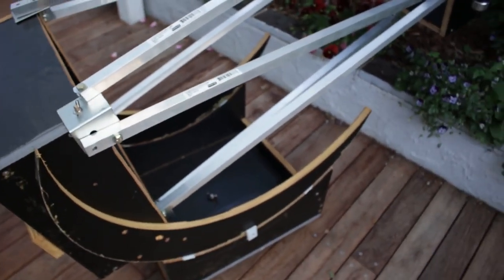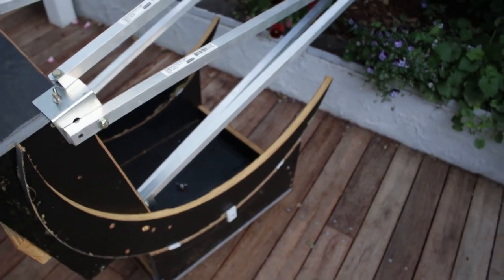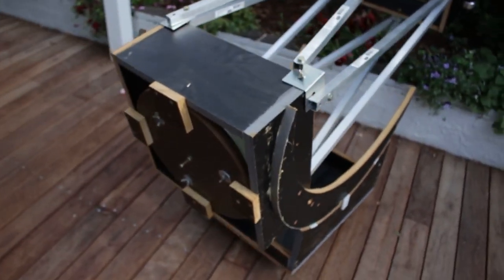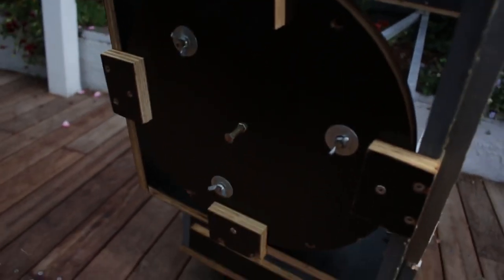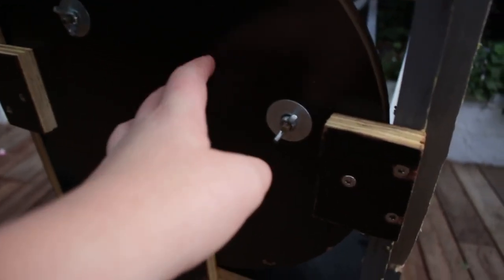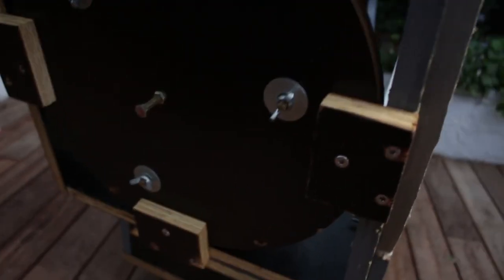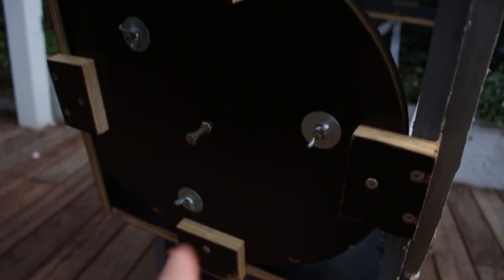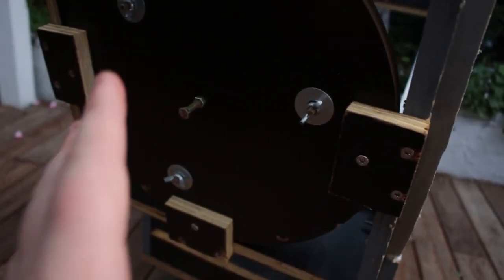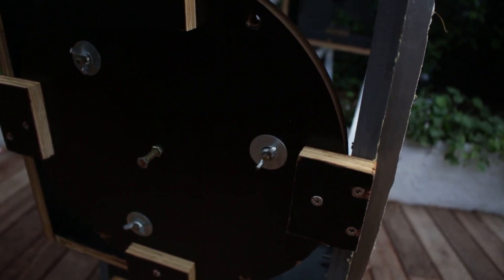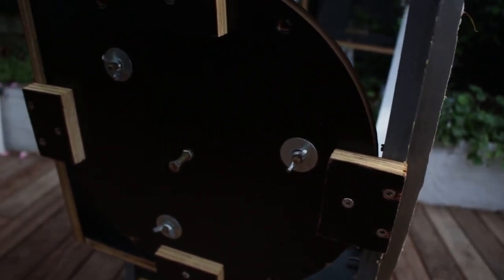Same applies on the rocker box. It sits on its own layer of Teflon, and it pivots like that. So here, we have the mirror cell. This is the part of the telescope that actually allows you to collimate it. So these screws will move the pointing of the mirror just slightly, so it can be focused at the exact right point on the secondary mirror.